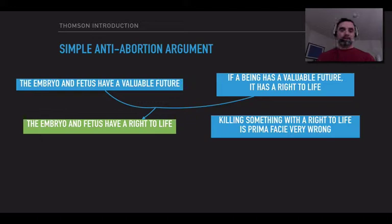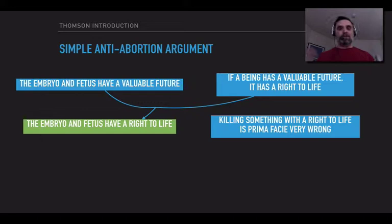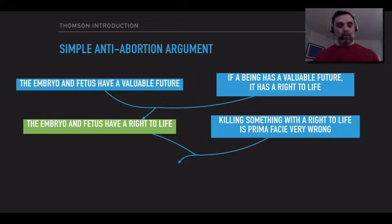The two premises on the right — we've split up Marquis' premise. Remember, Marquis says if a being has a valuable future, then it's prima facie very wrong to kill it. And we've divided that into two: if a being has a valuable future, it has a right to life, and then if you have a right to life, it's prima facie very wrong to kill you. Proceeding, we can say that embryo and fetus have a right to life, and because killing something with a right to life is prima facie very wrong, we get the conclusion that abortion is prima facie very wrong.